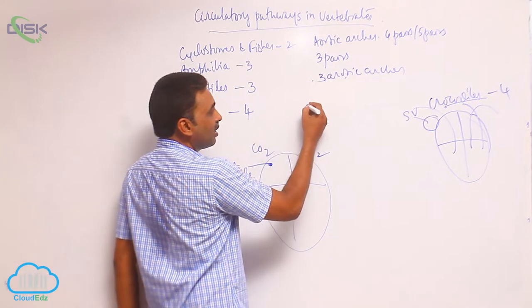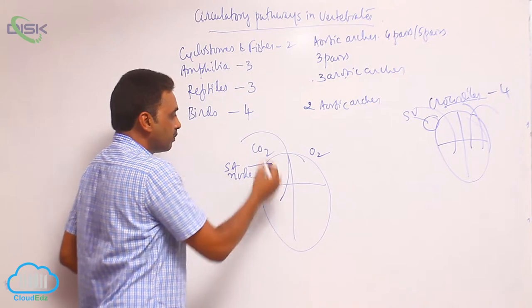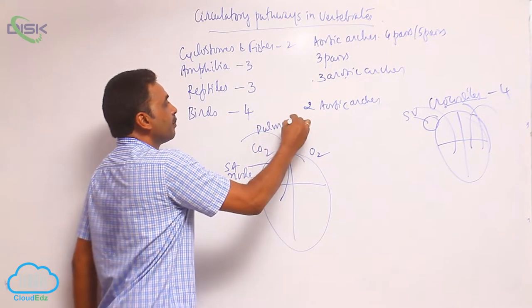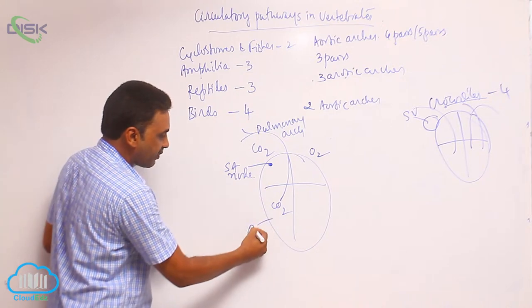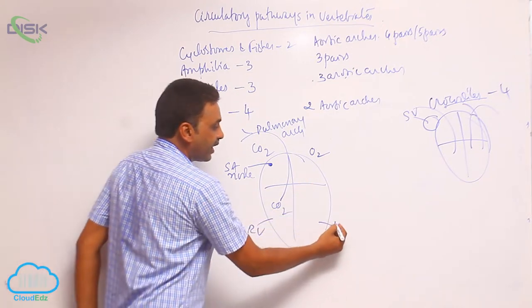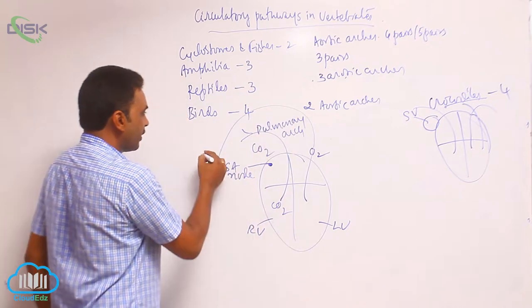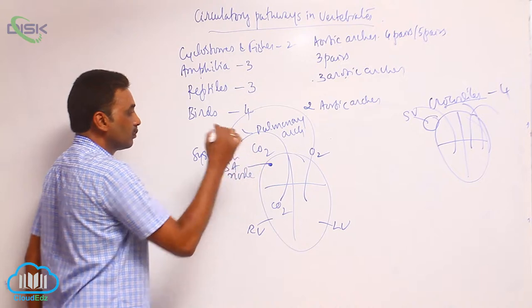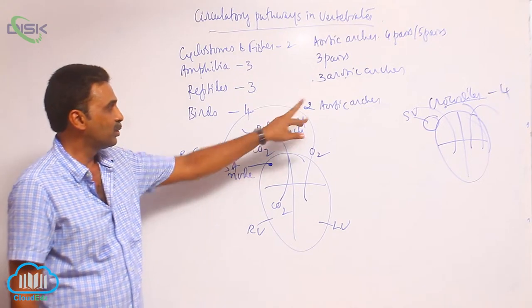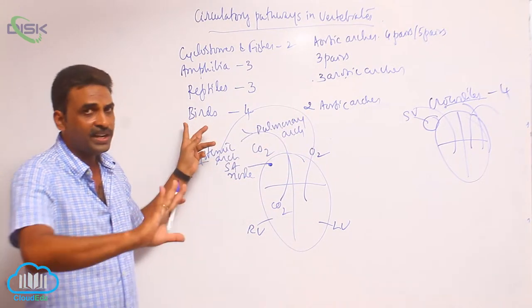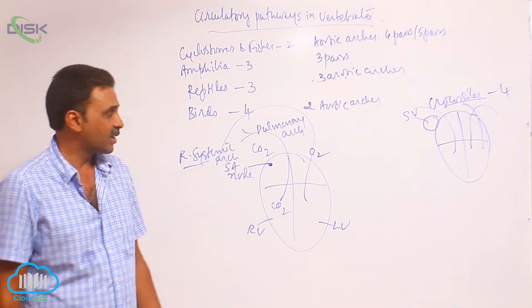Associated with the bird's heart, we have two aortic arches only. One is the pulmonary arch, which takes deoxygenated blood outside — it starts from the right ventricle and goes to the lungs. The other is the systemic arch; there is only one systemic arch here, and since it goes to the right side, we call it the right systemic arch. Complete double circulation is seen because the right and left sides are completely separate with no mixing of blood.